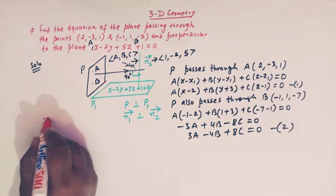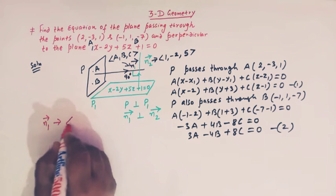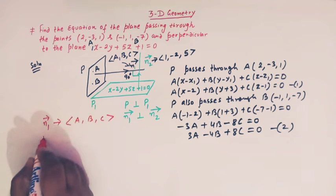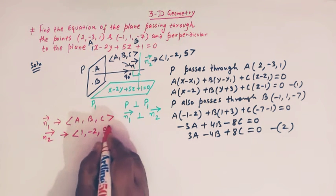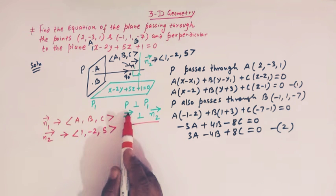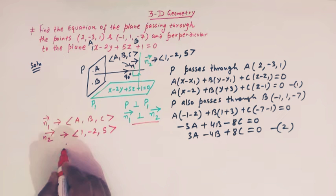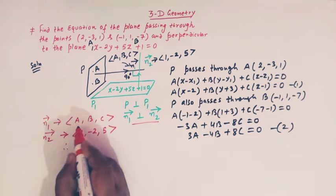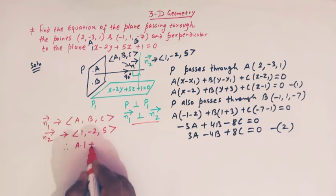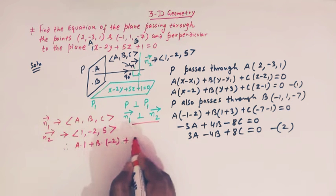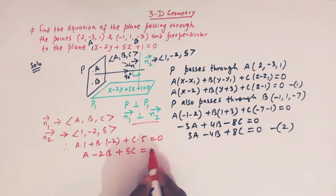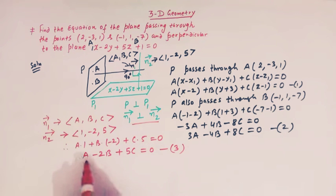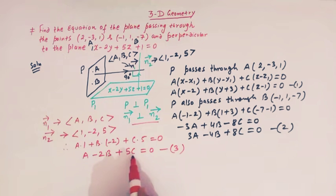Now let us formulate one more equation using the perpendicularity condition. The direction ratios of N1 are (a, b, c) and of N2 are (1, -2, 5). Since N1 is perpendicular to N2, their dot product is zero: a(1) + b(-2) + c(5) = 0, giving us a - 2b + 5c = 0. This is equation number 3.